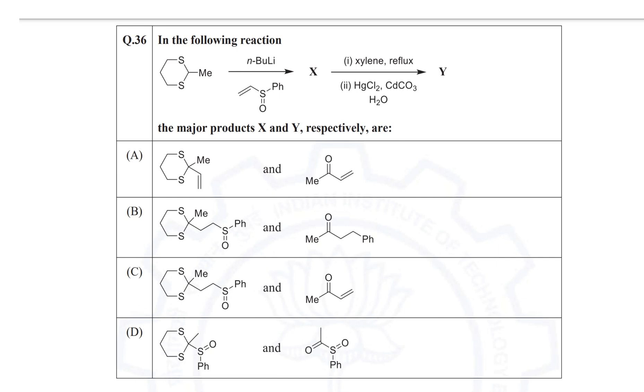Hi guys, welcome back to my channel. Today I am here with another question from GATE 2021. The question is: an acetyl is given which is treated with a strong base like n-butyl lithium and an alpha-beta-unsaturated compound, a sulfoxide. The product X is formed, and then X is treated with xylene in refluxing condition, followed by HgCl2, CdCO3 hydrolysis to form product Y. So we have to determine X and Y. Before doing this question, we'll cover some background reaction on how the acetyl is formed and what is the application of acetyls.